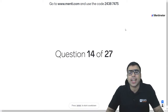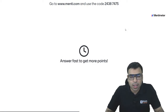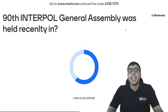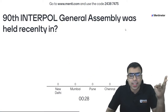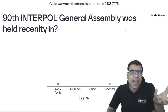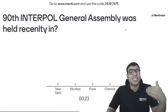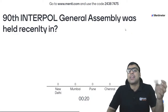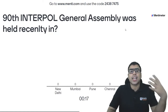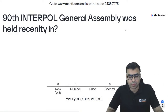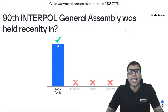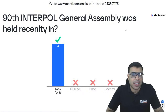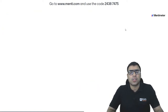Question number 14: the 90th Interpol General Assembly was recently held in which Indian city? Options: New Delhi, Mumbai, Pune, Chennai. Interpol is the International Police Organization. The right answer is A — New Delhi. The 90th Interpol General Assembly was actually held at Pragati Maidan in Delhi. So A is the right answer.